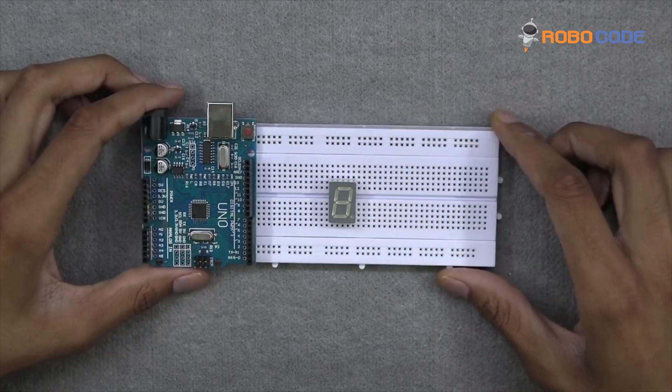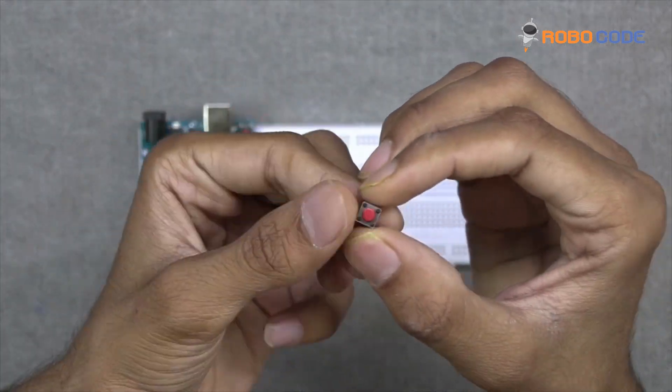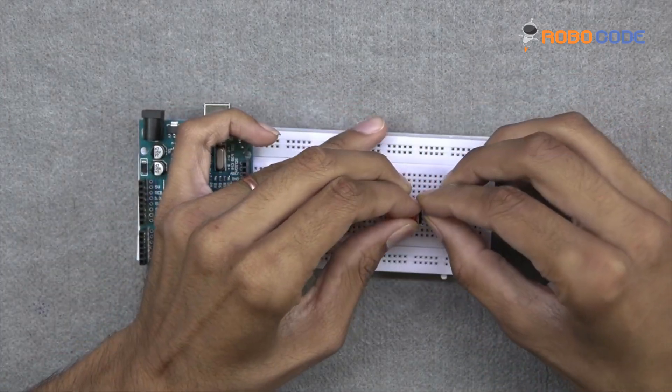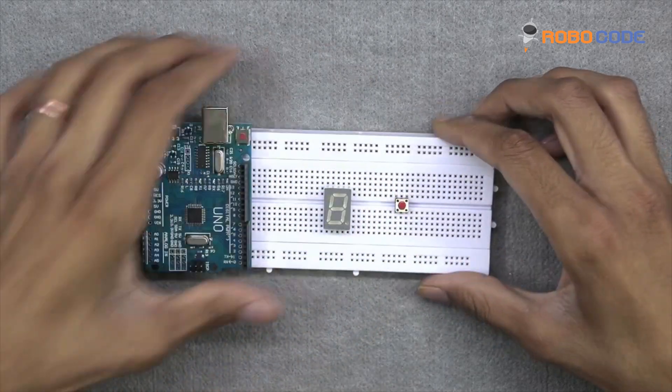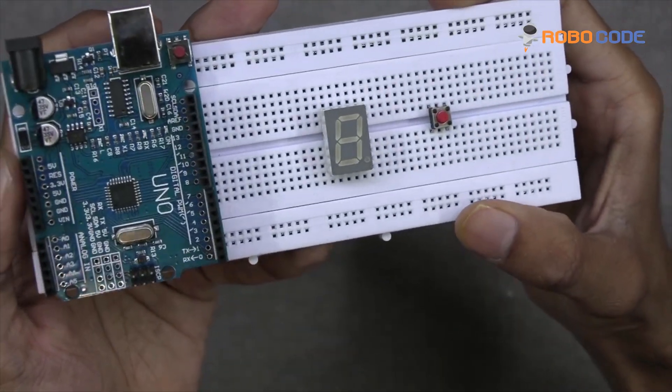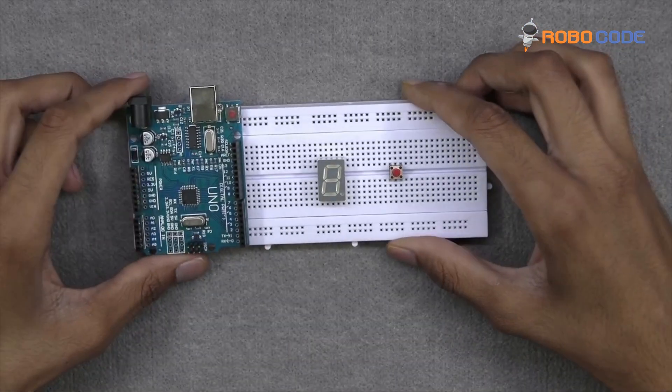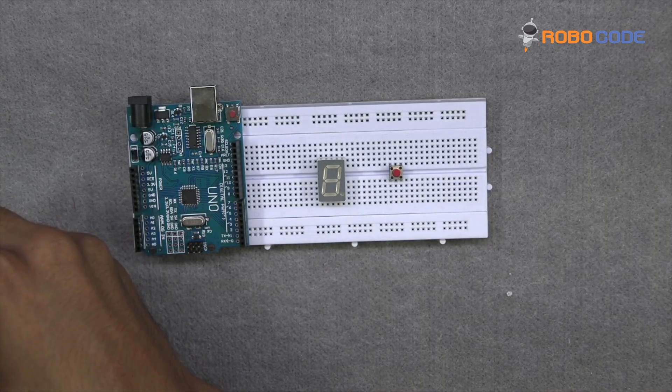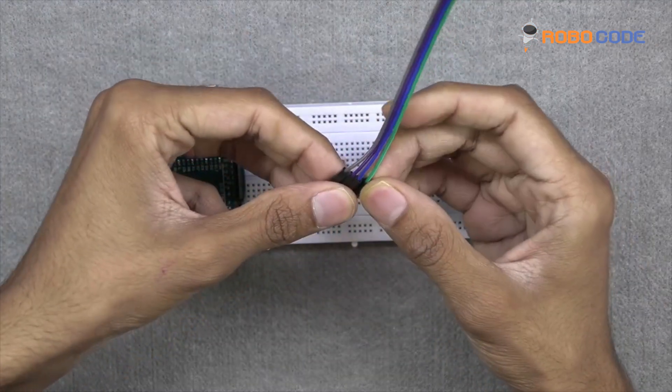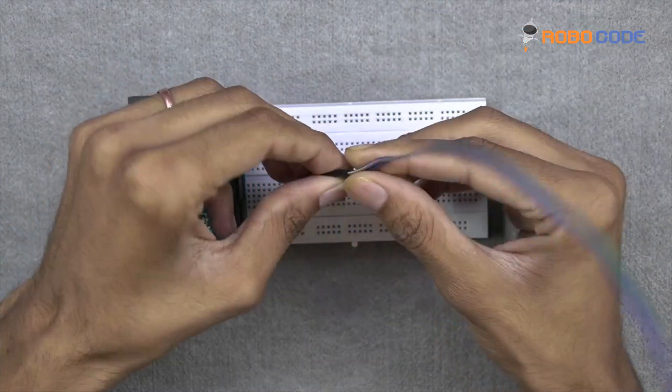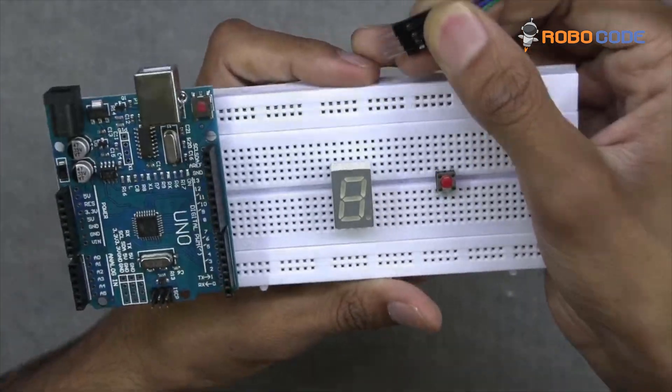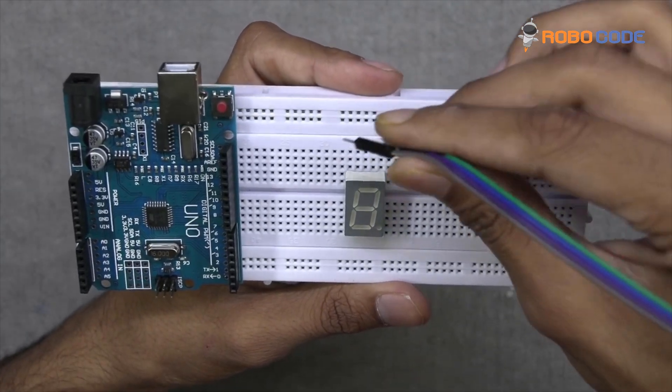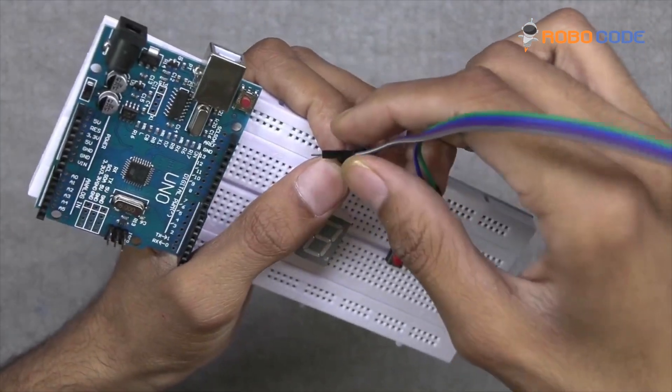Once that is done, we will take the push button and insert it in the breadboard as you can see in this video. Now take the male to male jumper wires. We will take 4 wires and insert those 4 wires on the top of the LCD.